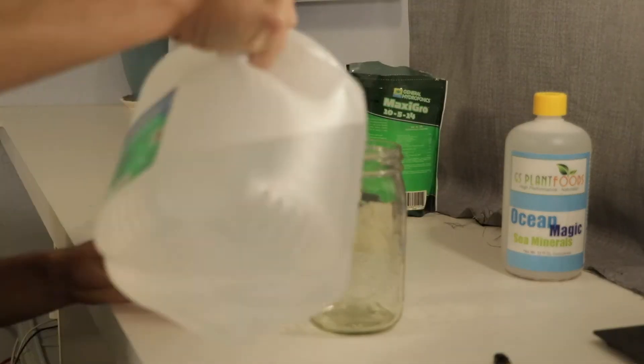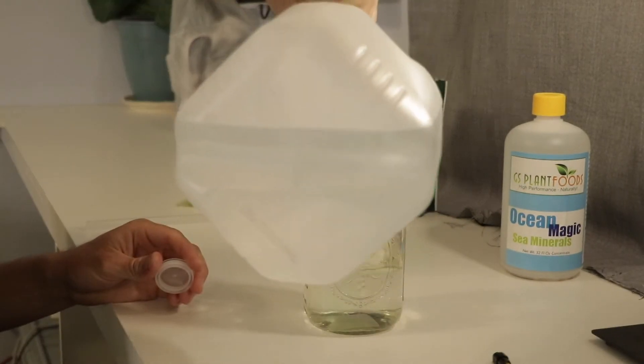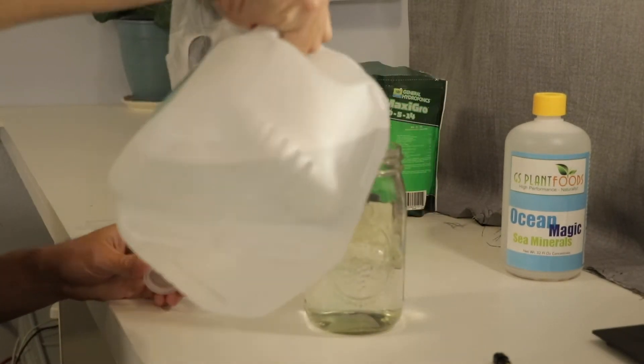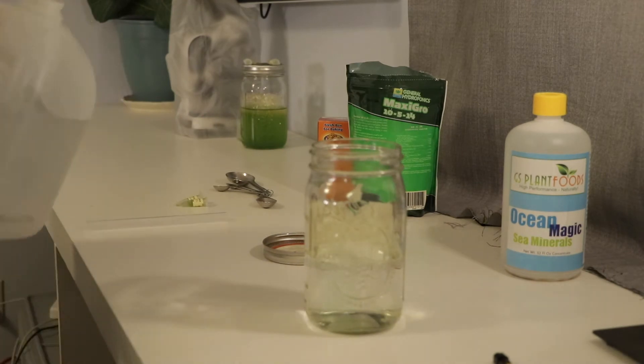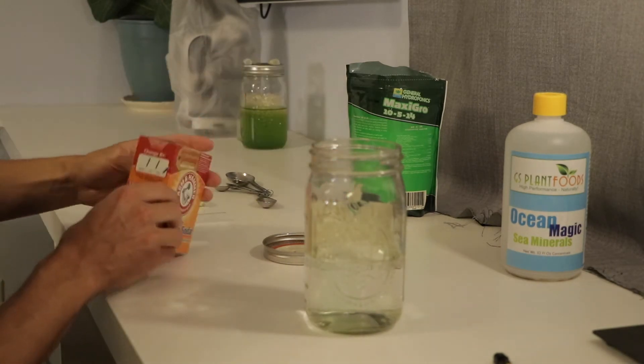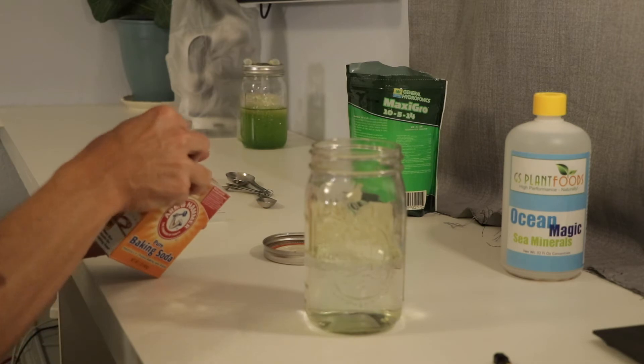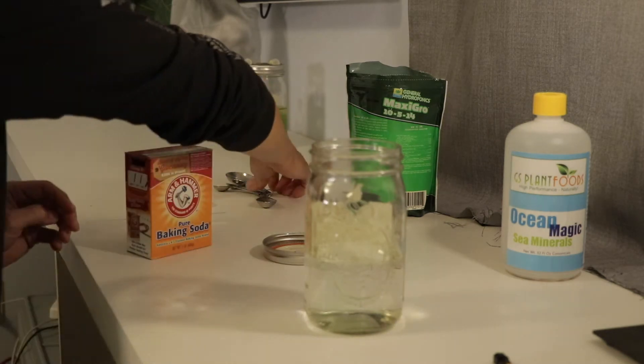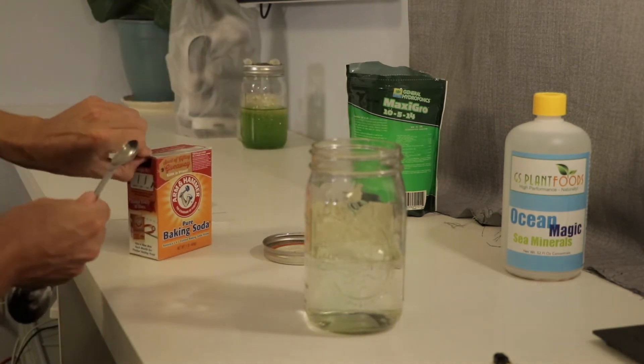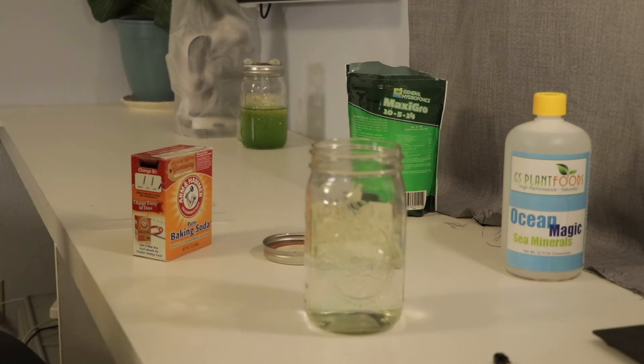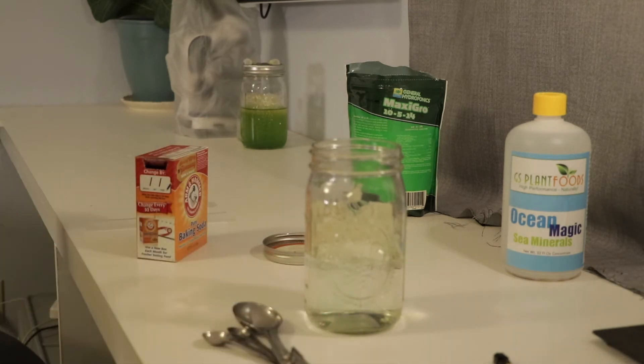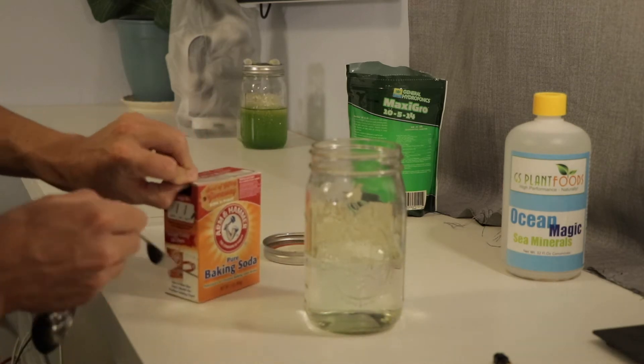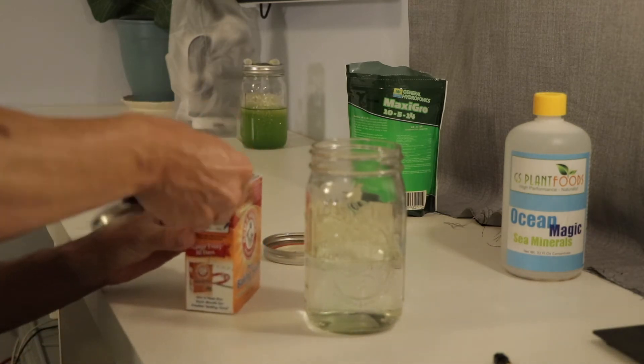Now getting to the final parts of this video is mixing the new media to expand my algae culture and then transferring the culture. So really four main parts to my custom media mix. And I owe all of this to Apex Grower. He is a great guy on YouTube, very informative, and I've learned a lot from him already. So the four parts to my media is water, baking soda, ocean magic sea minerals, and maxi grow hydroponics plant food.